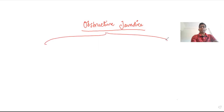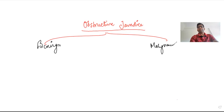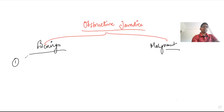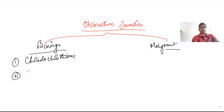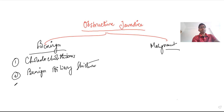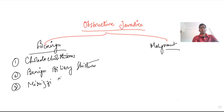The differential diagnosis of obstructive jaundice is divided into two broad groups: benign causes and malignant or neoplastic causes. The commonly encountered benign causes are: first, choledocholithiasis; second, benign biliary stricture, which can occur after cholecystectomy, particularly after laparoscopic cholecystectomy; and third, Mirizzi syndrome, where there is extraluminal compression on the common bile duct due to stones present in the gallbladder.